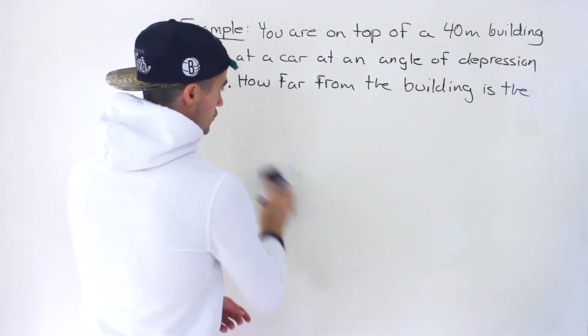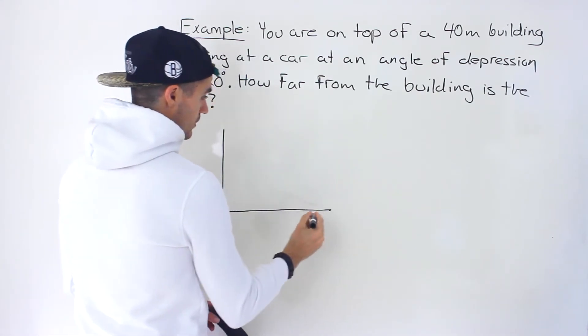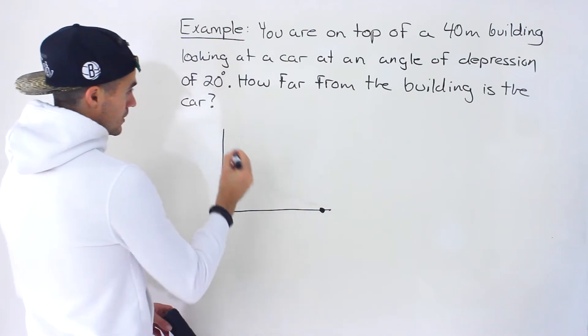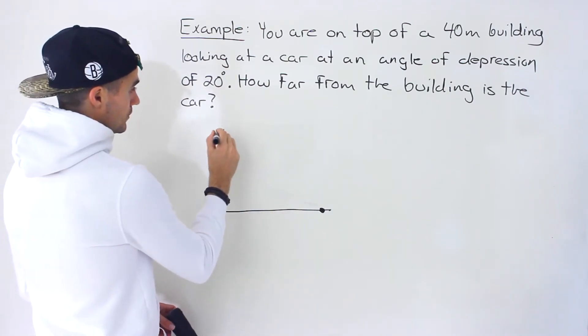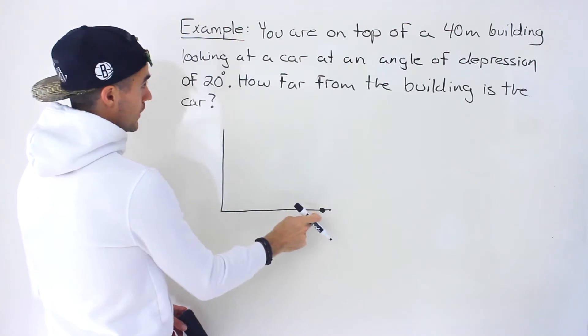So if we draw a diagram here, let's say that this here is the building, okay, this is the ground, and then we have a car that is right here. So you are on top of this building looking down at an angle of depression of 20 degrees to this car.